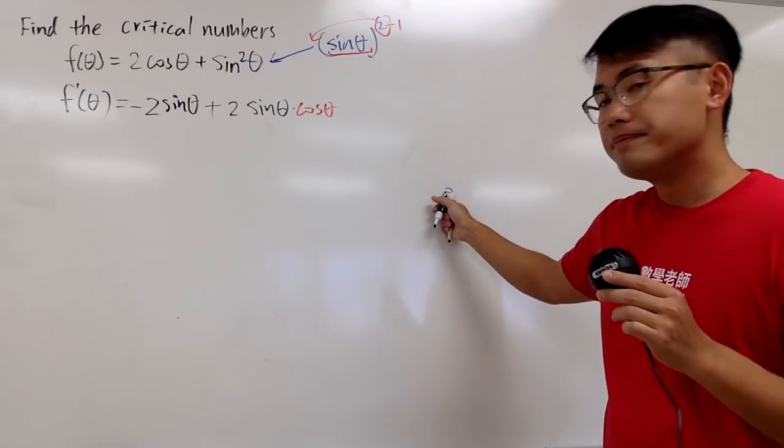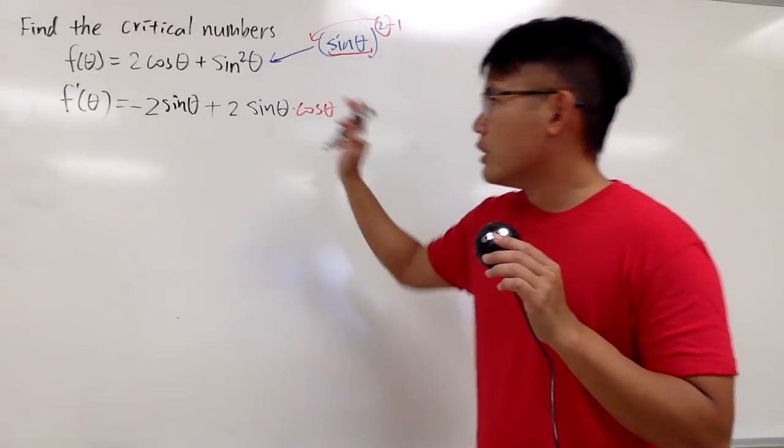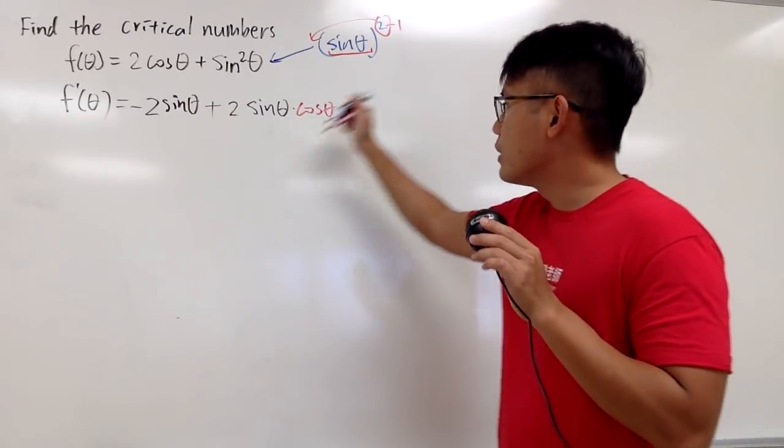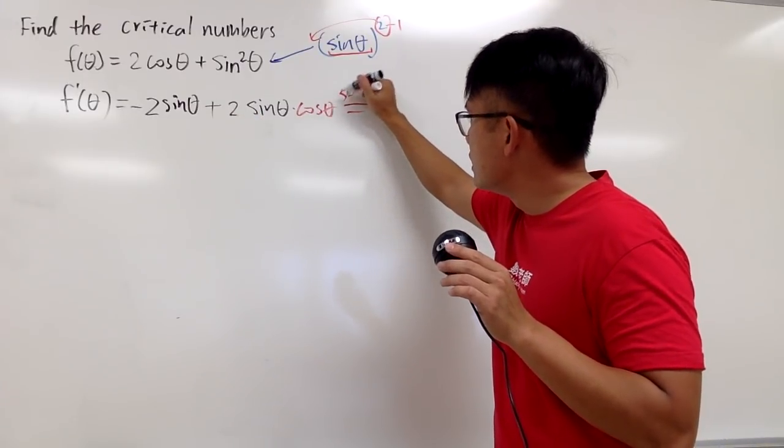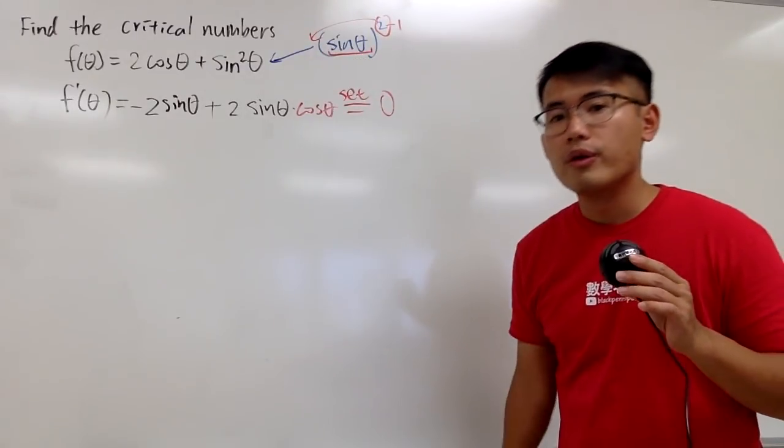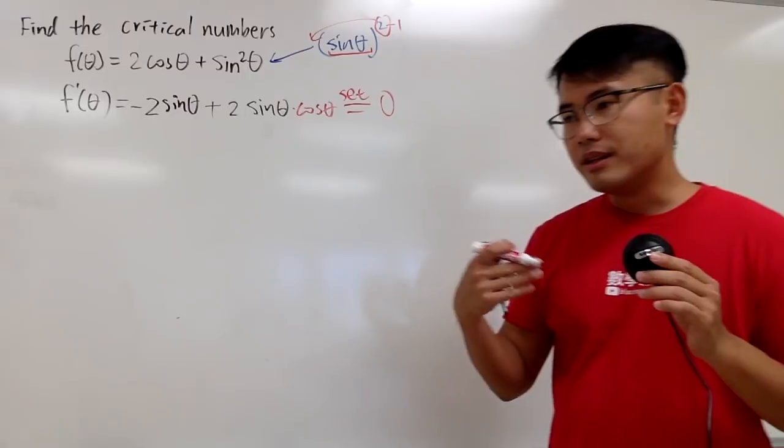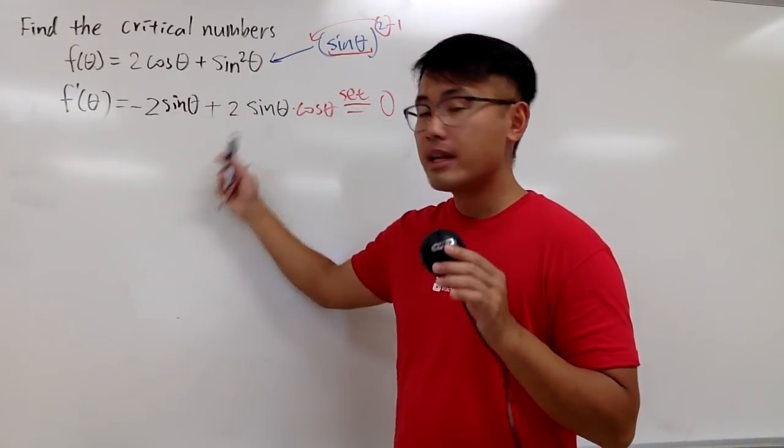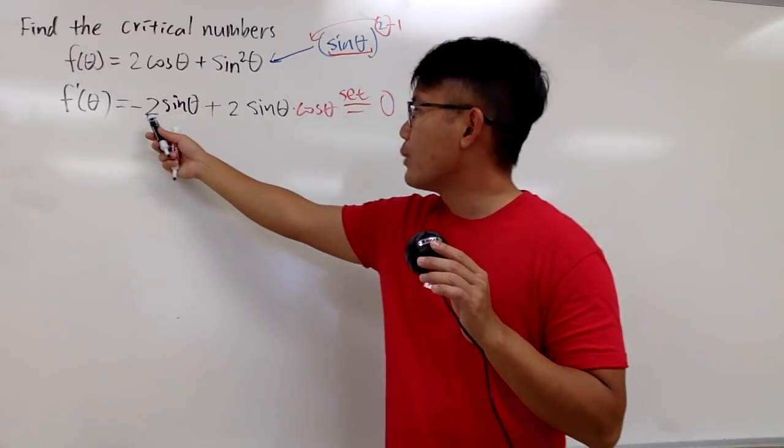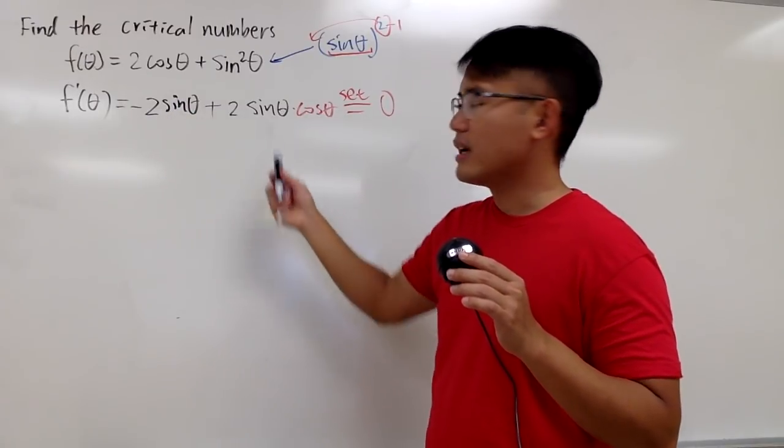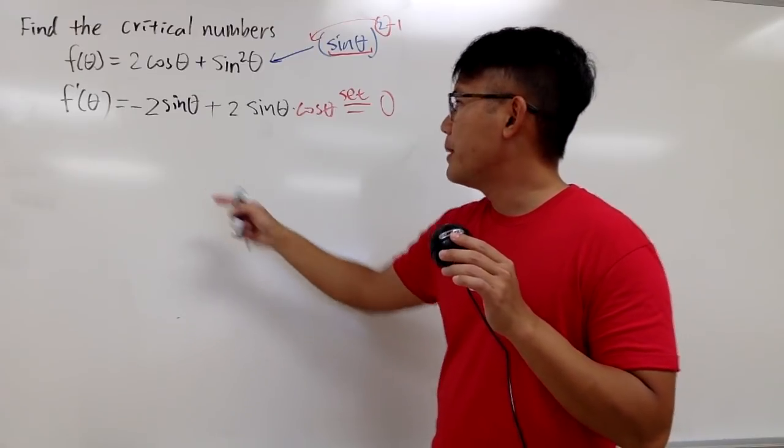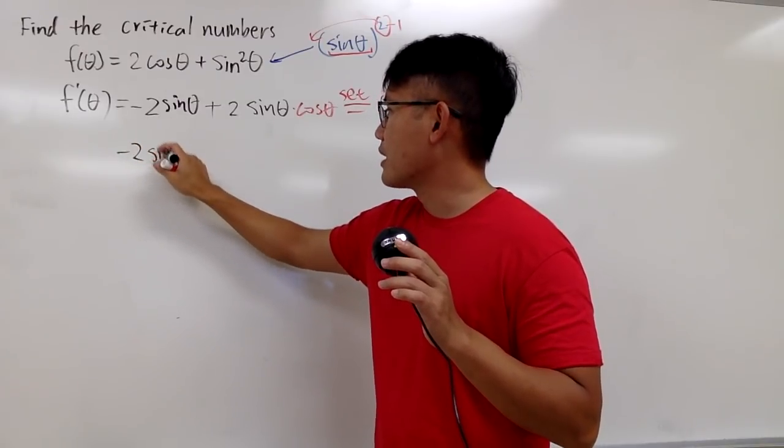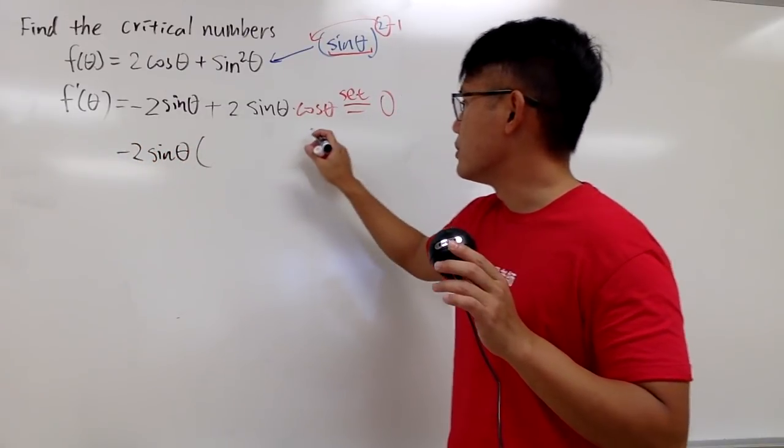And right here, it seems that we don't have any fraction. So it looks like our derivative is going to exist everywhere. And I can just go ahead and set this to be 0 for the critical numbers. I don't have to worry about the DNE does not exist situation. And right here, to solve this equation, notice that we have 2sinθ, 2sinθ, so we can factor that out. I think I will just factor out negative 2 and also the sinθ, because the rest is just solving equations.